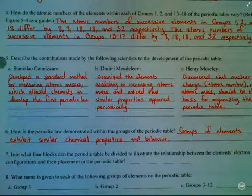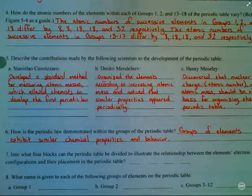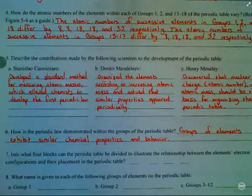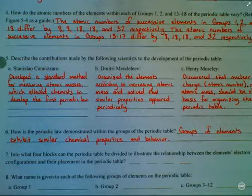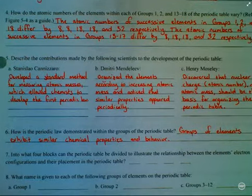Number six, how is the periodic law demonstrated within groups of the periodic table? Well, groups of elements exhibit similar chemical properties and behavior.